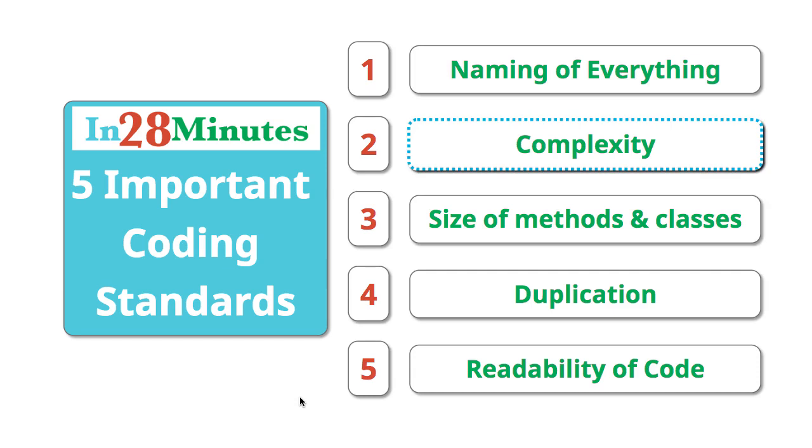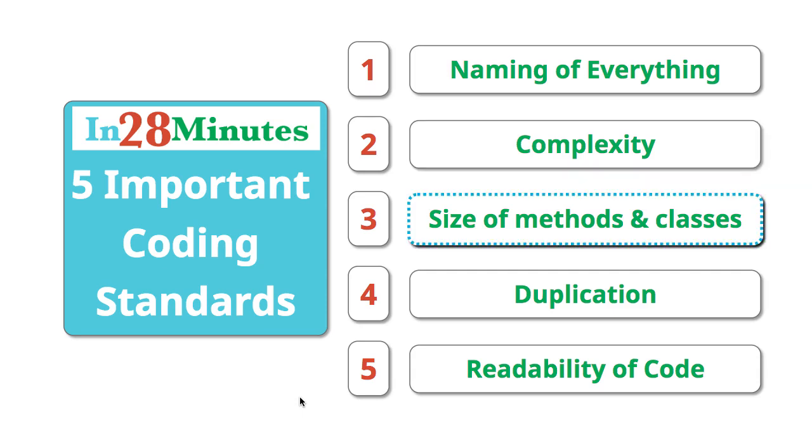For complexity, I don't like methods which are greater than 10. So cyclomatic complexity of a method should always be less than 10. The length of the method should not exceed whatever you can see on a single screen. And the size of a class should never exceed more than 200 lines.